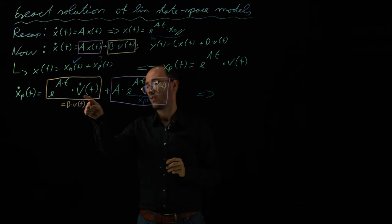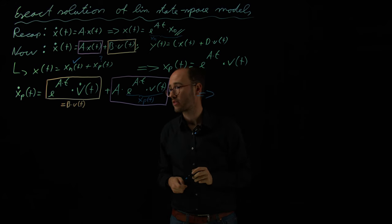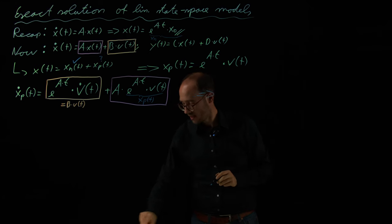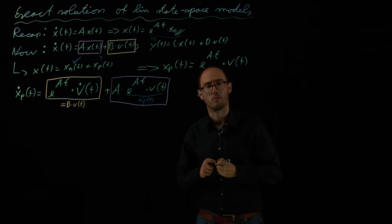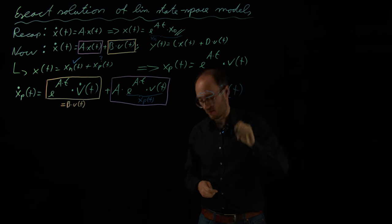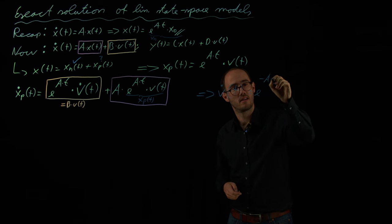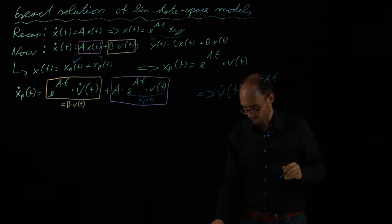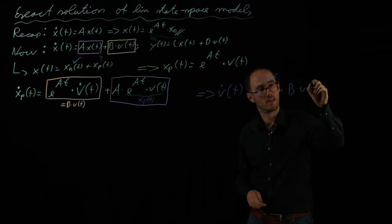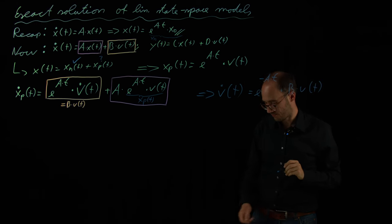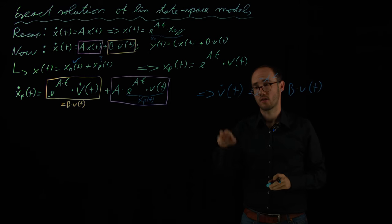We can utilize this finding to solve for the unknown v_dot(t). So v_dot(t) is identical to e^(-At) times B times u(t). This is a differential equation in v_dot(t), so in order to find v(t) we can just apply an integral to both sides.